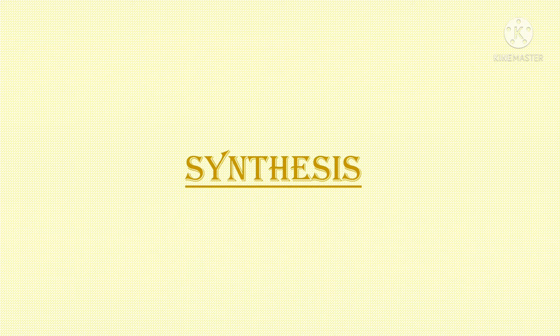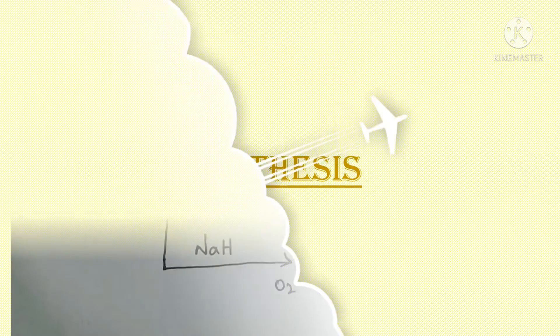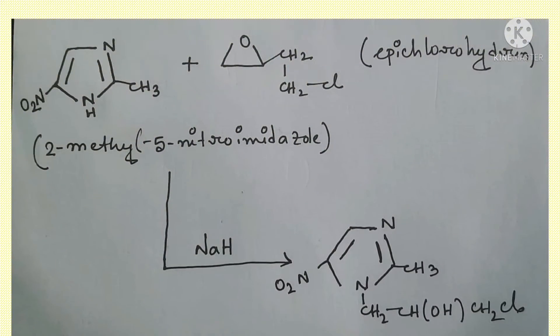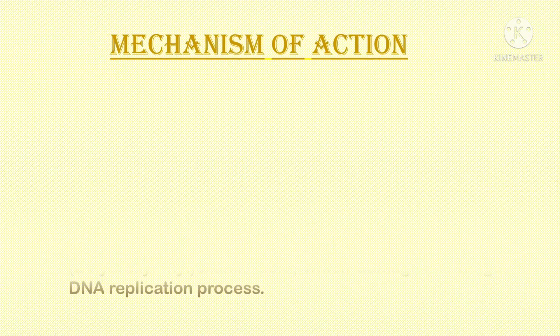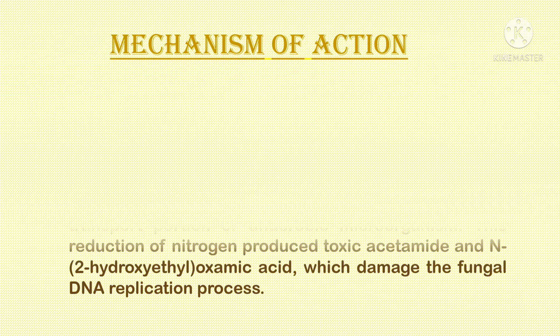The third part is synthesis, which is the most important part. 2-methyl-5-nitroimidazole is reacted with epichlorohydrin in the presence of NaH to produce our final product, ornidazole.